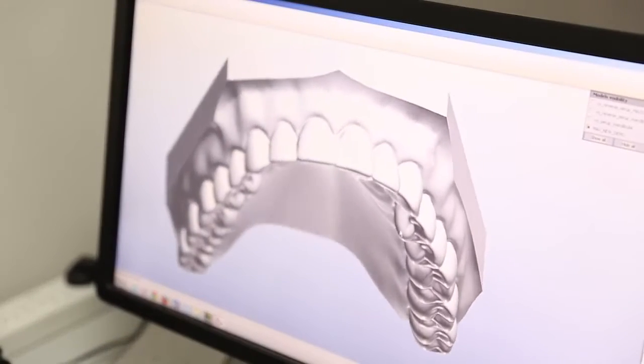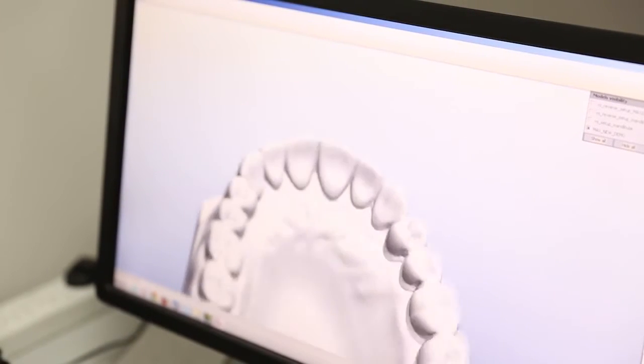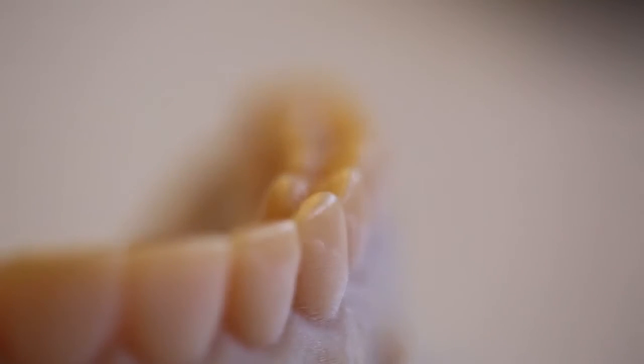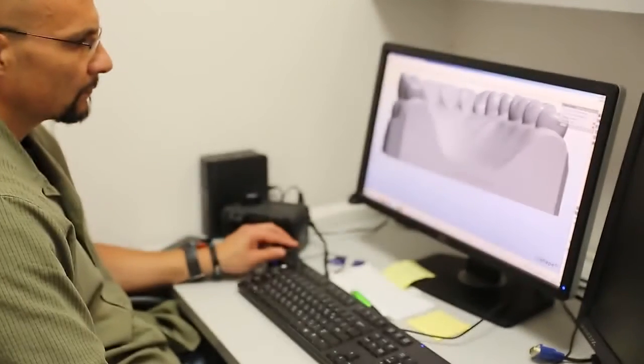We like to keep all the information digitally and we know that every time that we need something, we can always print it out. So it saves us a lot of space and a lot of time by categorizing everything. We have everything on file and we can print whenever we want.